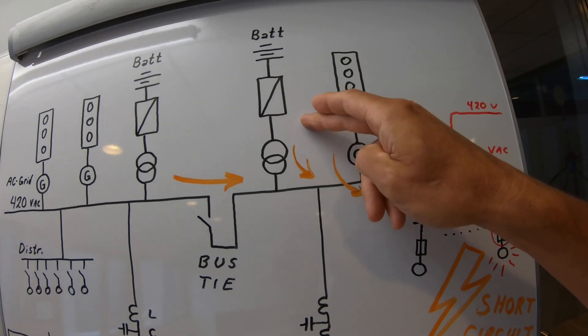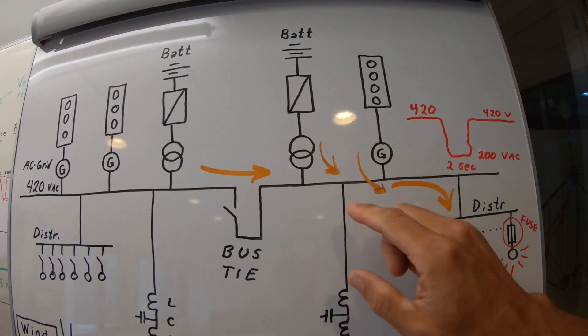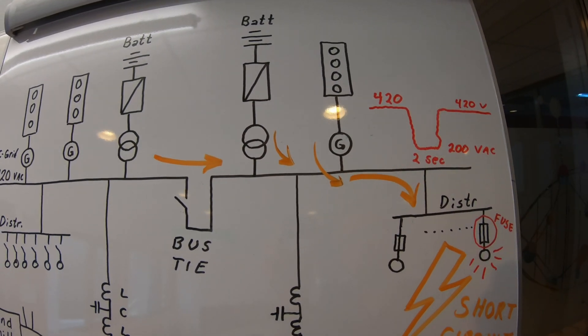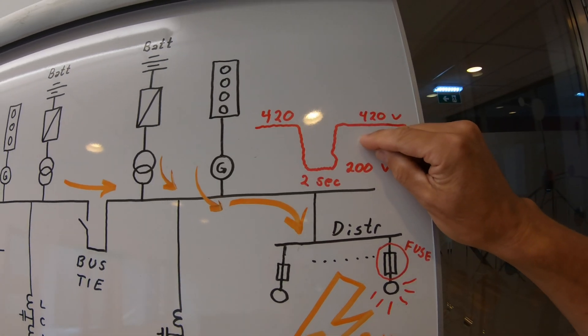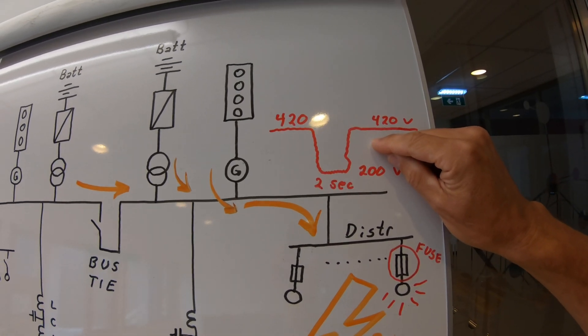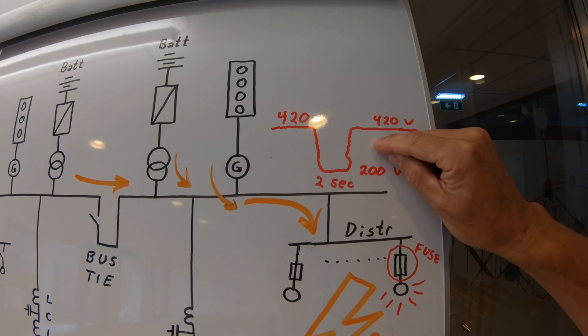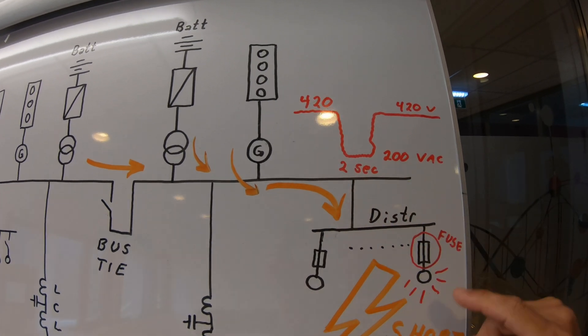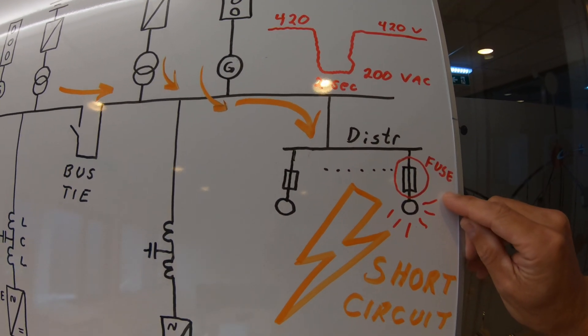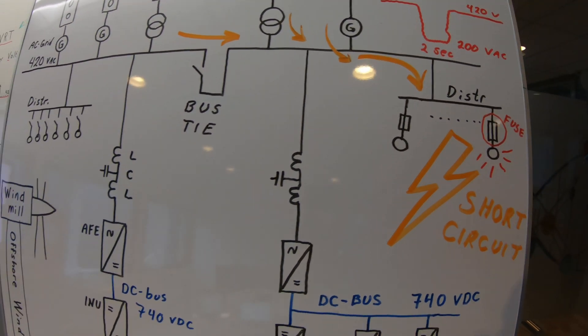And it might be, especially when the batteries are the only power source, that the AC grid is weak. So you will see a surge in the voltage on the AC bus bars. And this can last up to two seconds before you blow the fuse.